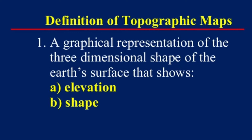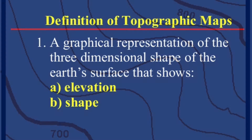This lesson will center around the definition of a topographic map. A topographic map is a graphical representation of the three-dimensional shape of the Earth's surface that shows both elevation and shape. Topographic maps are used to determine the shape of the land and the land surface with contour lines.